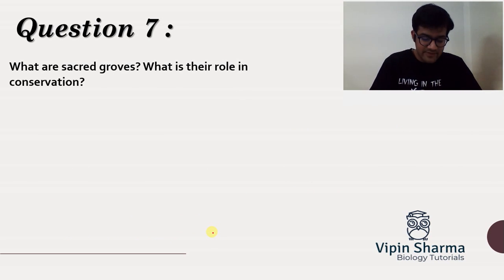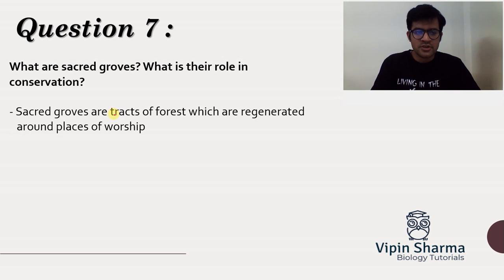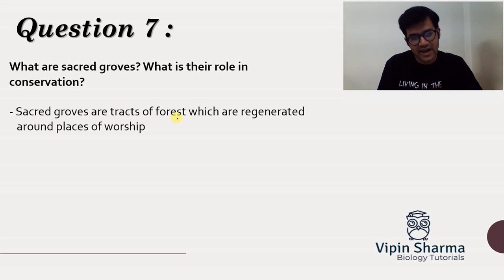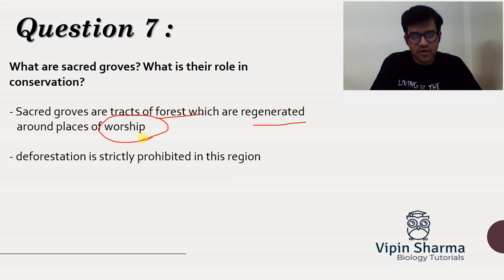Question number seven asks: what are sacred groves and what are their roles in conservation? This hasn't been discussed in any of the other videos, but it is important. There are trees like Neem, Banyan, and Peepal which are related to religion and cultural practices. Sacred groves are tracts of forest which are regenerated on places of worship. If you worship something, you will definitely not cut it or cause any harm to it.